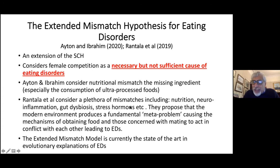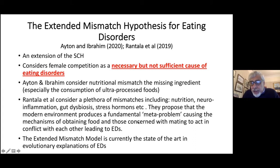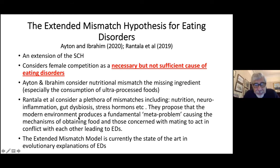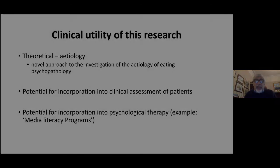Rantala et al. consider a plethora of mismatches, including nutrition, neuroinflammation, gut dysbiosis, stress hormones, and others. They propose that the modern environment produces a fundamental, what they call meta-problem, causing the mechanisms of obtaining food and those concerned with mating to act in conflict with each other, unlike what occurred in the ancestral environment. In my view, the extended mismatch model is currently the state of the art in evolutionary explanations for eating disorder.